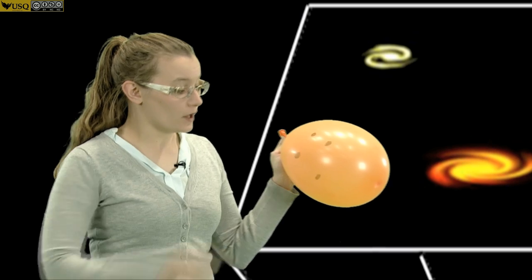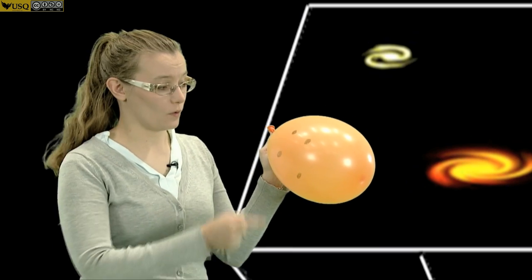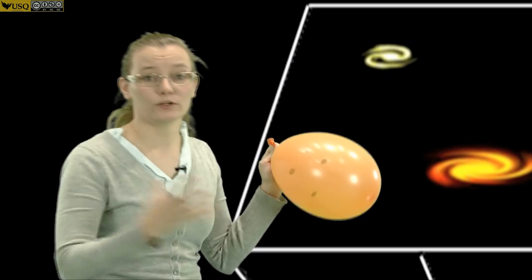The dots have moved further apart from each other. It's not that this dot has moved further away from this one and this one and this one. They've all moved further apart from each other. And this is the way that our universe expands. And this is how we know that there has to be dark energy there from this expansion.